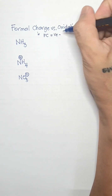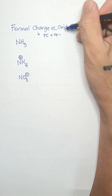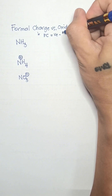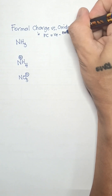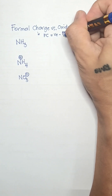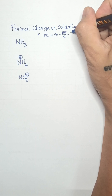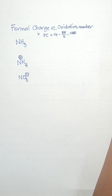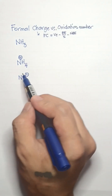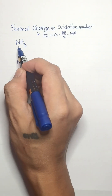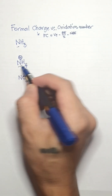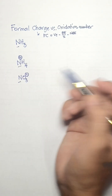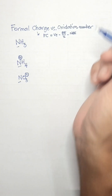To calculate the formal charge of an atom, we will use the formula: FC equals valence electrons of that atom minus its number of bonding electrons over 2, minus the number of non-bonding electrons surrounding it. We have here ammonia, ammonium ion, and nitrate ion.